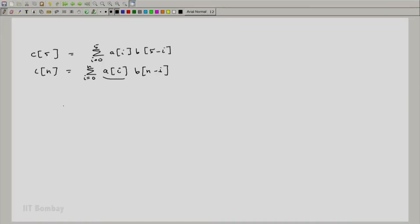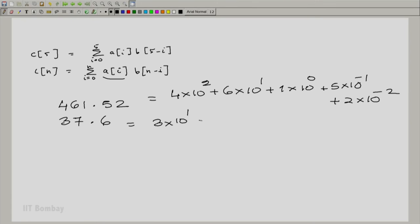When you multiply two numbers written to a certain base, you see, for example, suppose I wrote two numbers, say 461.52 let us say and 37.6. What is this? This is 4 into 10 squared plus 6 into 10 plus 1 into 10 to the power 0 plus 5 into 10 raised to the minus 1 plus 2 times 10 raised to the power minus 2. And this is 3 times 10 raised to the 1 and so on. And now when you are multiplying these, this is an instance of the polynomial multiplication which Siddhant talked about.